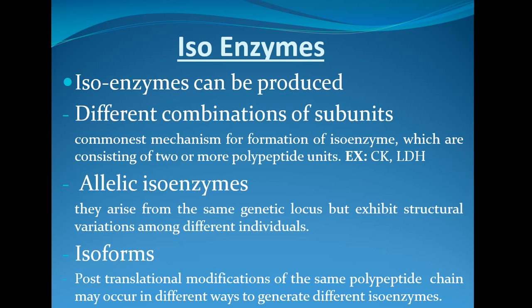Similarly, LDH has six isoenzyme forms because it has three or four subunits in its structure — details will be explained in later slides. The different combinations of subunits is the commonest mechanism for the formation of isoenzymes which consist of two or more polypeptide units.